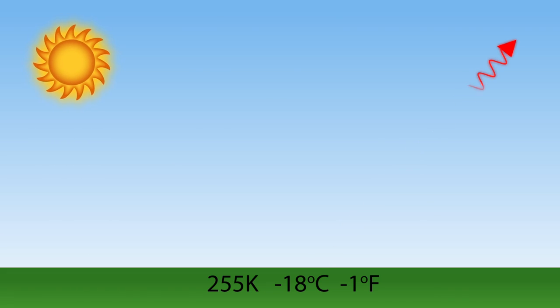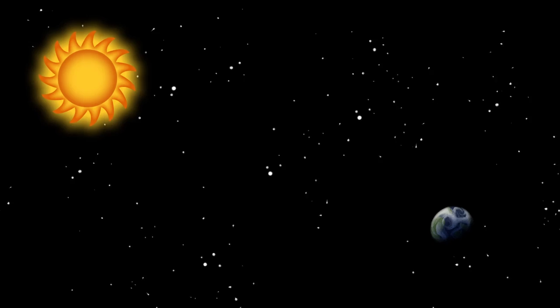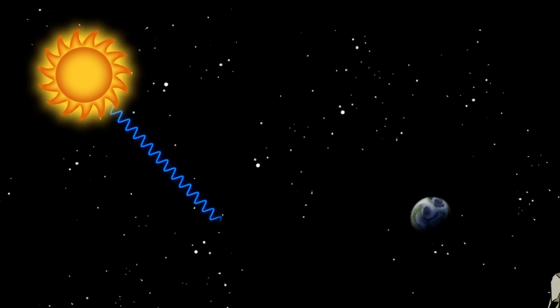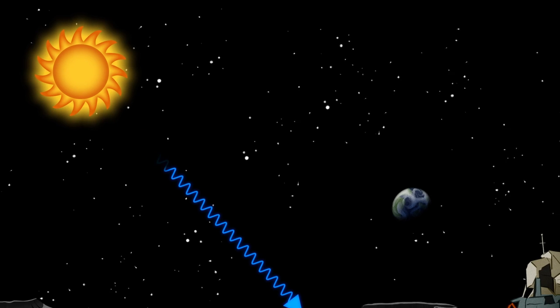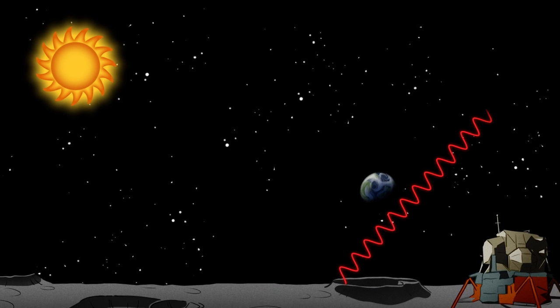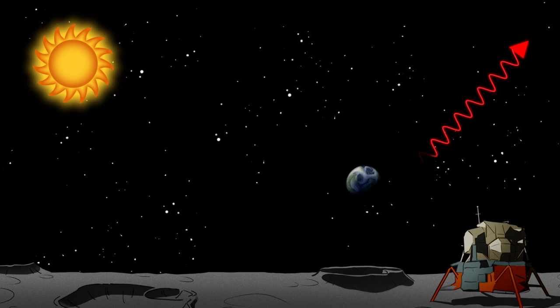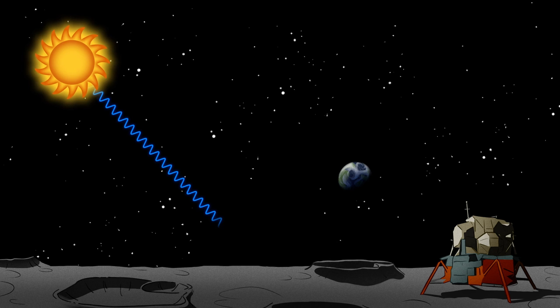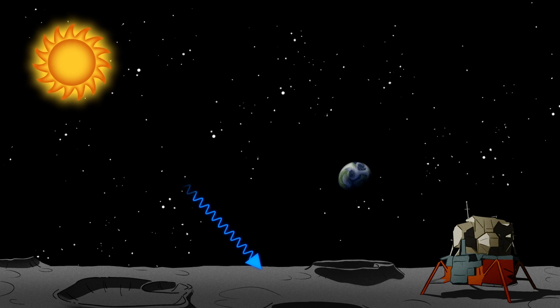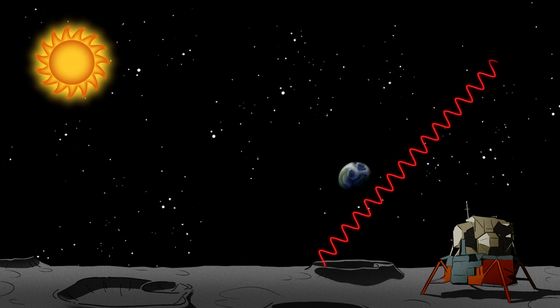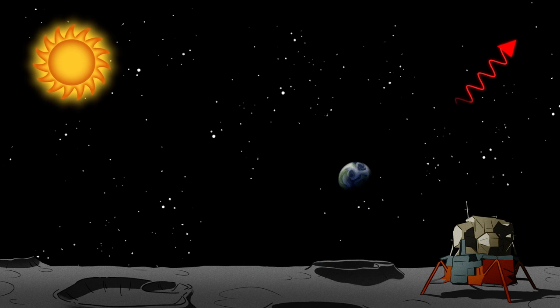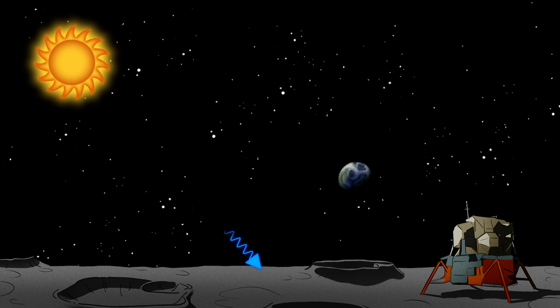So that's like the default temperature that the Earth should be with the Sun where it is? Absolutely. And in fact, interestingly, it is about the temperature of the Moon — the average temperature of the Moon is about minus 18 to minus 20 centigrade — because the Moon doesn't have an atmosphere. Clearly the Earth is not at minus 18 degrees centigrade, and that's where the greenhouse effect kicks in and keeps us nice and warm.